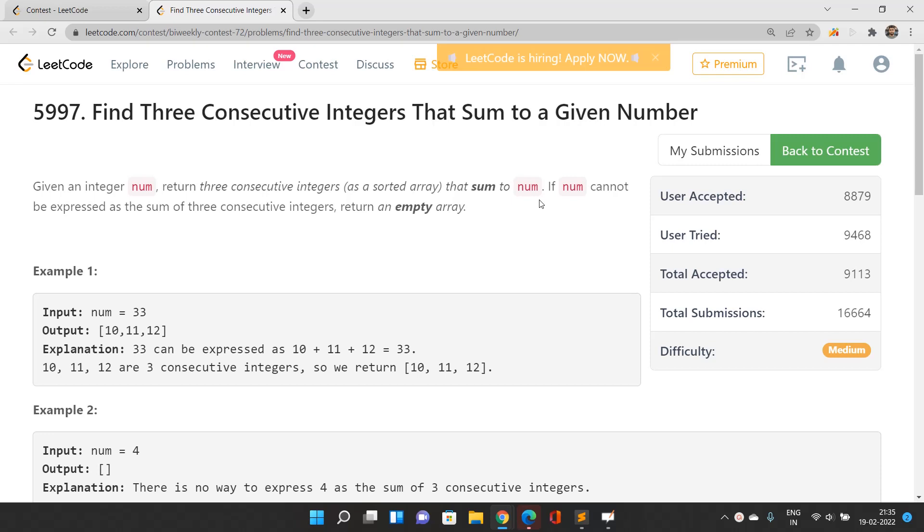If there is the possibility that you're not going to have valid three consecutive integers, then in that case you're going to return an empty array. So that would be your answer.